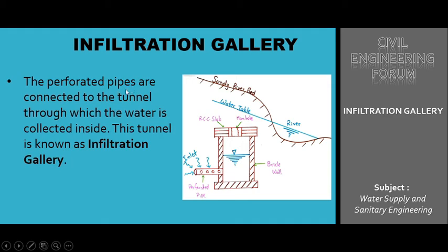Perforated pipes are connected to the tunnel through which the water is collected inside. This tunnel is known as infiltration gallery. Here we have perforated pipes with small holes, so water gets collected inside by this perforated pipe — water inlet and water stored inside the horizontal tunnel. Yahan pe ek perforated pipe fix kiya jata hai jahan pe ye chhote chhote holes reheti hai, wahan se water inlet reheti hai aur woh water directly transmit hota hai inside the infiltration gallery.